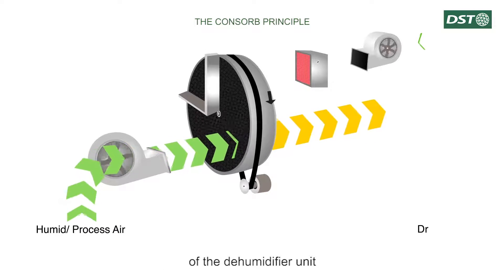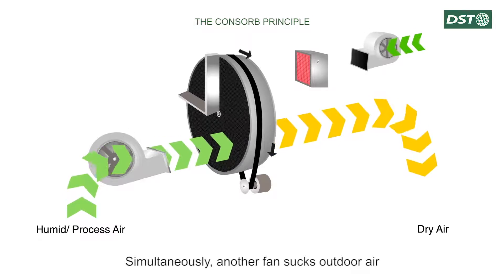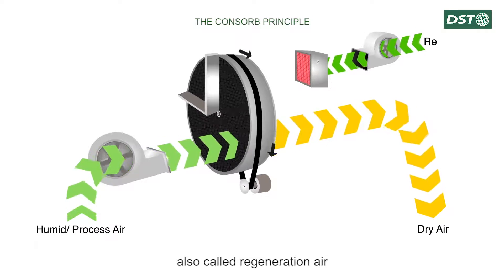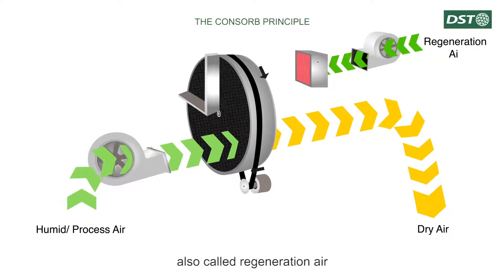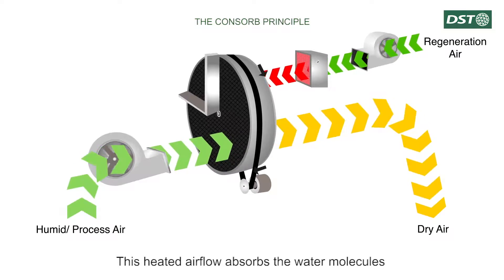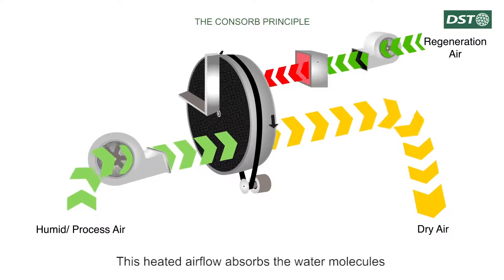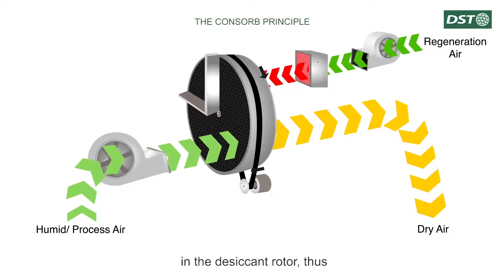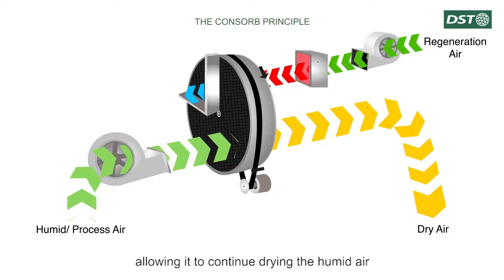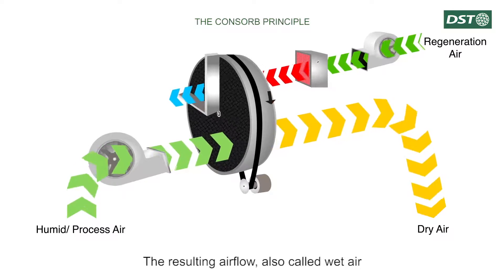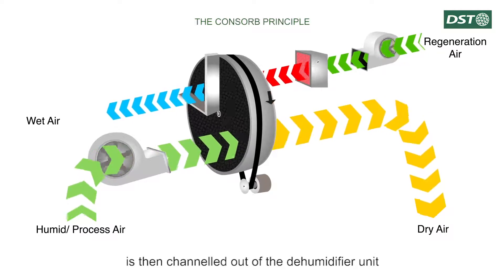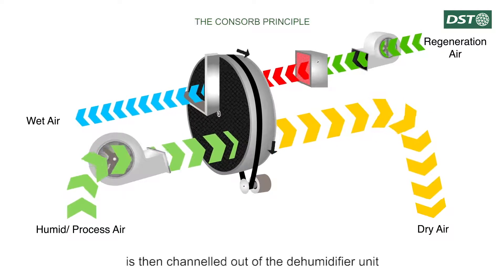Simultaneously, another fan sucks outdoor air, also called regeneration air, through a heater and the rotating desiccant rotor. This heated airflow absorbs the water molecules in the desiccant rotor, thus allowing it to continue drying the humid air. The resulting airflow, also called wet air, is then channeled out of the dehumidifier unit.